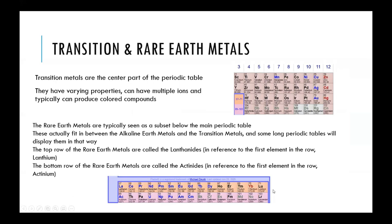The top row is referred to as the lanthanides, because the first element is lanthanum, and the bottom row is referred to as the actinides, because the first element in that row is actinium.